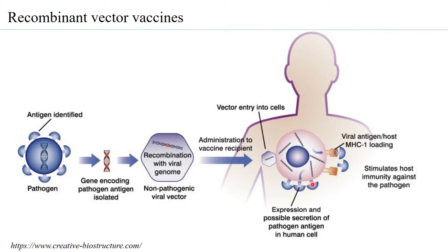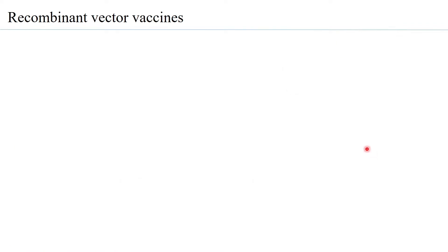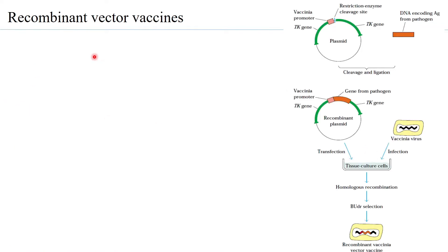The antigen can also be expressed directly on the surface of the cell and recognized by B cells. Since these are pathogen-associated molecular patterns, any immune cell with a pattern recognition receptor can come and bind, eliciting an immune response. Both B cells and T cells can get activated, resulting in both humoral as well as cell-mediated immunity being enhanced.